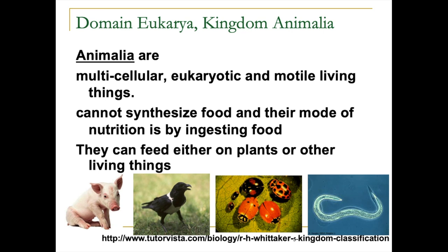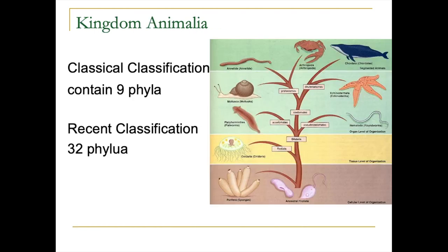Animals cannot synthesize their own food — to survive, every animal must eat. Large animals eat more, while small ones consume smaller nutrients. In terms of the food chain, animals are consumers: they eat plants, which are producers, acting as primary, secondary, or even tertiary consumers. Currently, in the high school system, animals are organized into nine phyla — from sponges to Chordata — but today we recognize around 32 phyla.